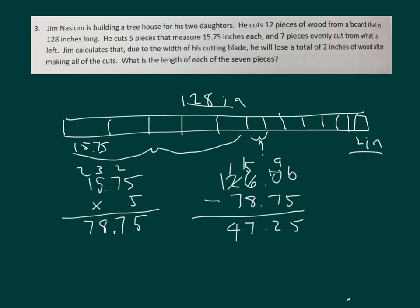And that's what I'm dividing by 7, because there were 7 pieces that were equally cut from what was left. 7 goes into 47 six whole times. 6 times 7 is 42. Subtract that, 52. 7 whole times, 49. 3. 35 divided by 7 is 5. So each of those pieces is 6.75 inches long.